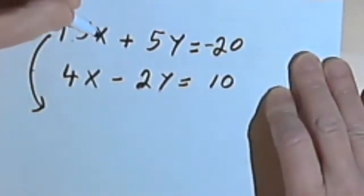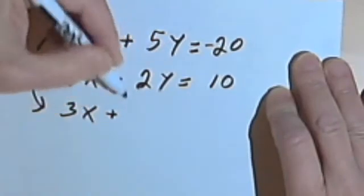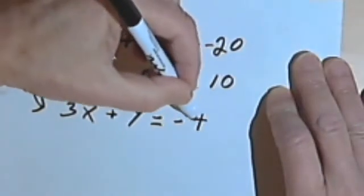That would mean instead of 15x, I would just have 3x. Instead of 5y, I would just have a y. And instead of negative 20, I'd have negative 4.